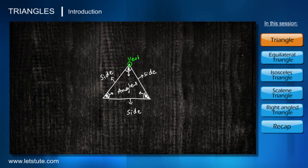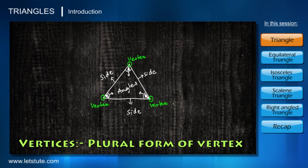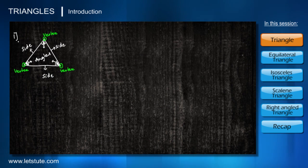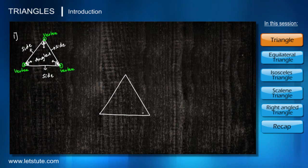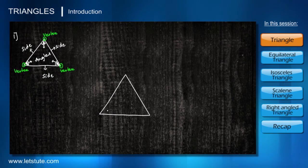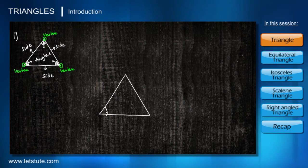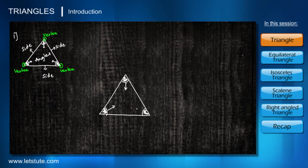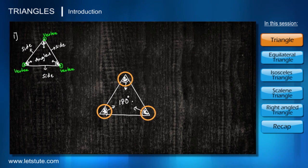Triangles have three endpoints, and each endpoint is called a vertex, and all the endpoints together are called vertices. Now that we are familiar with the shape triangle, the most important thing we should know is that when we add the measures of all three angles of a triangle, it will always give 180 degrees.